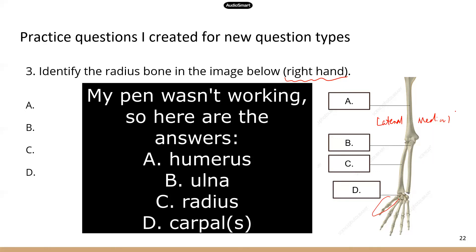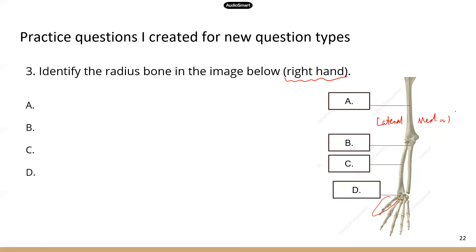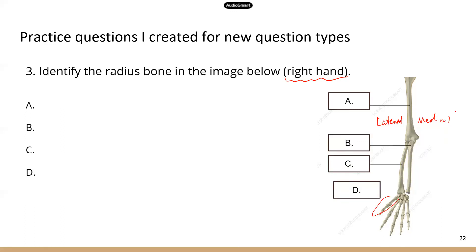And the C is radius. So C is the correct answer. So on TEAS you just click this spot right here. My pen is not working, but you know, C is the correct answer. And D is carpal, and you have a bunch of carpal bones in the wrist.